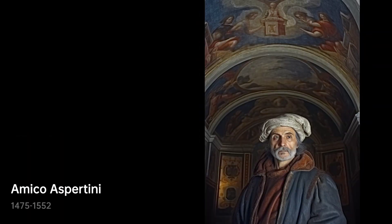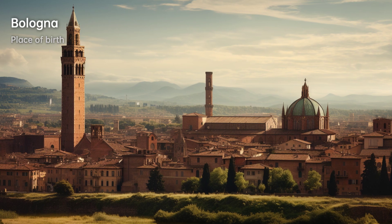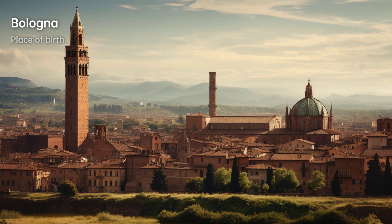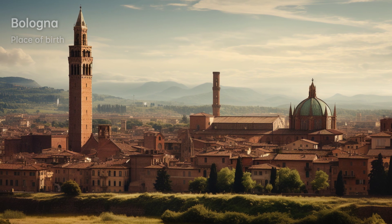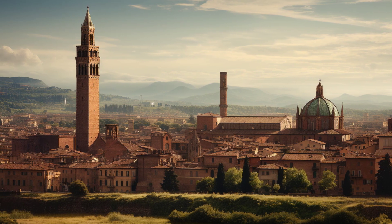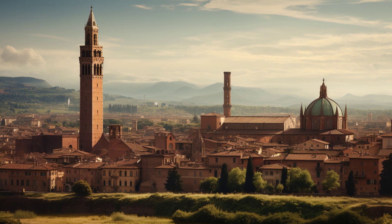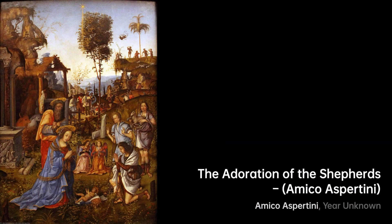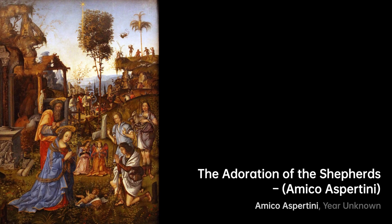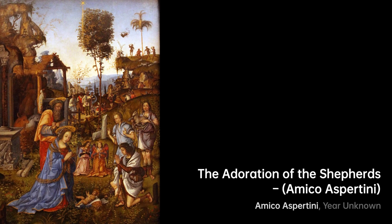Amico Aspertini, also known as Amarigo Aspertini, was an Italian painter and sculptor who was born in Bologna in 1475 and passed away in 1552. Aspertini's art style was considered complex, eccentric, and eclectic, and is seen as an early indication of the mannerism movement.